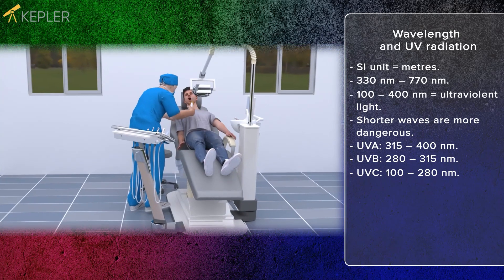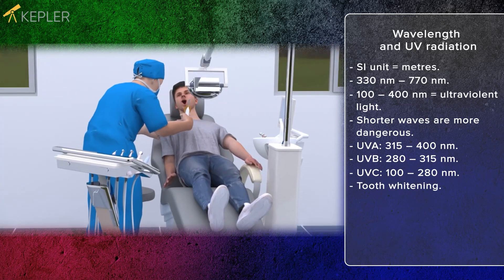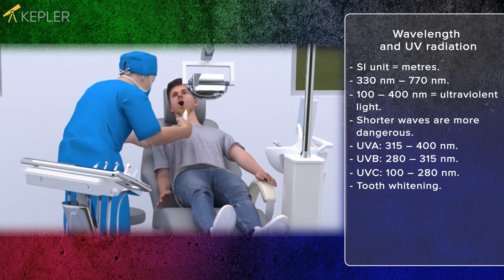UV radiation can also be used during tooth whitening. First, a layer of strong whitening agent is applied to the teeth, which are then illuminated with UV radiation. By illuminating the teeth, the tooth whitening agent heats up and makes the active ingredient work faster.